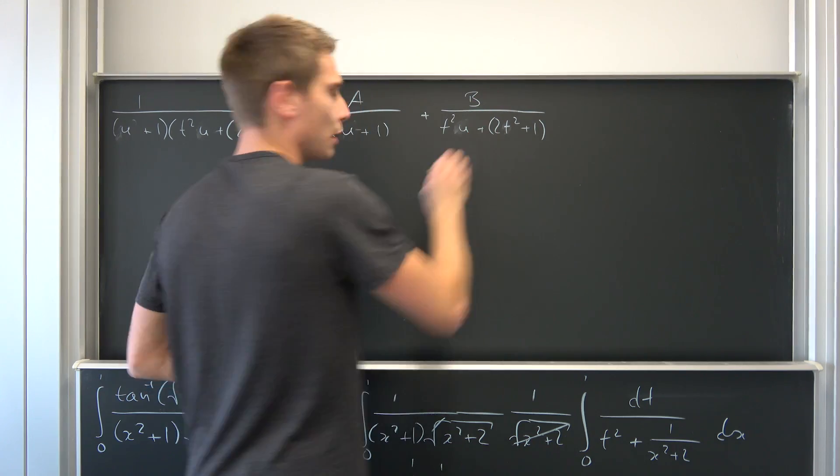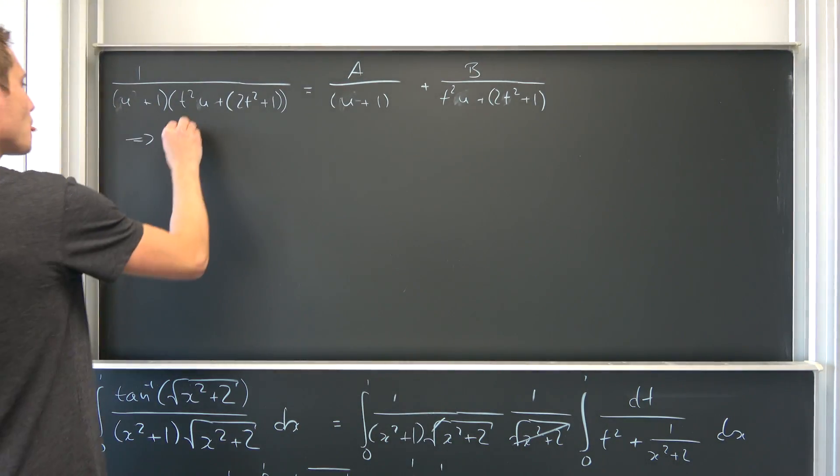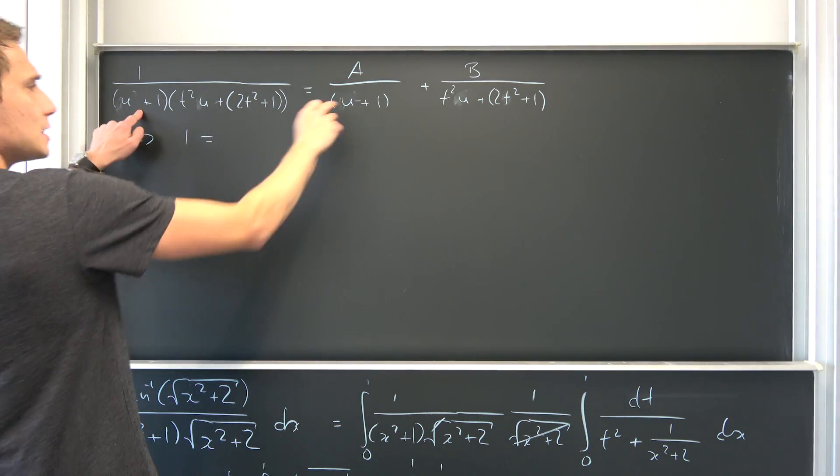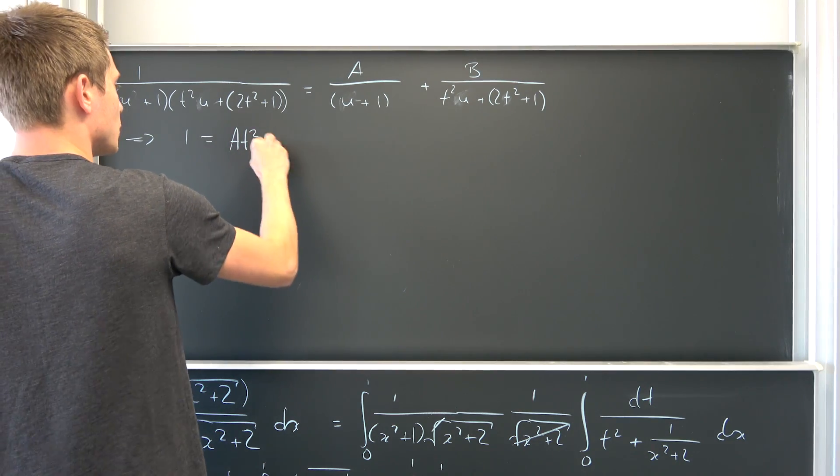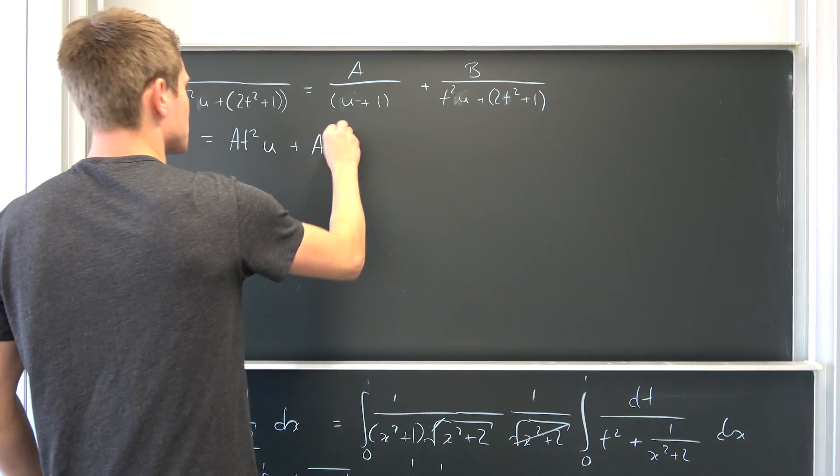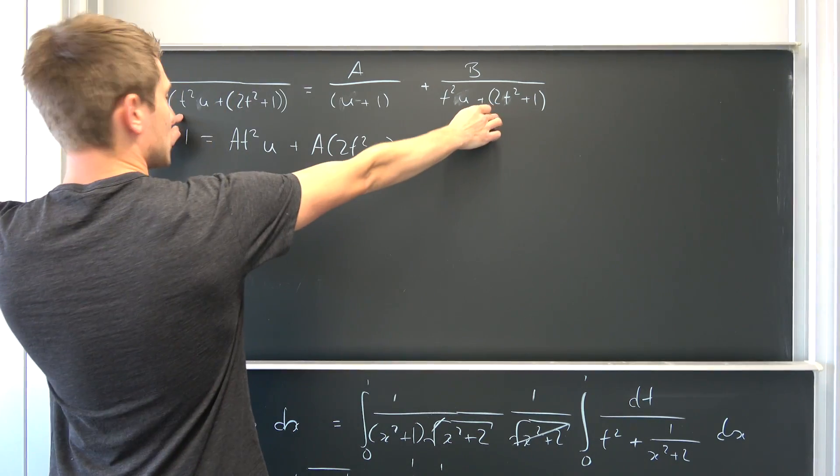Now we can just multiply both sides by this big denominator. We don't want it to be equal to zero. That means 1 is nothing but—so this and that is going to cancel out. So A times this chunk, A times t squared u plus A times 2t squared plus 1, and also we have to multiply those two together.